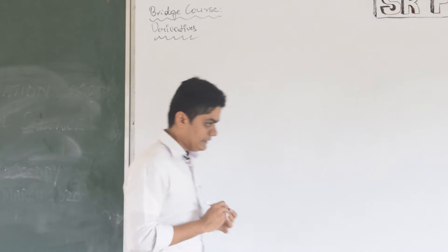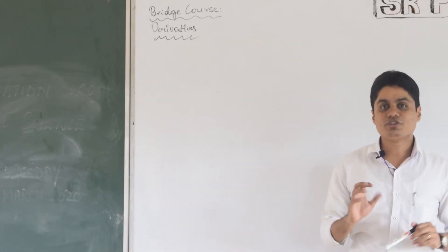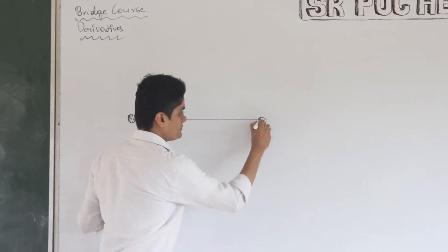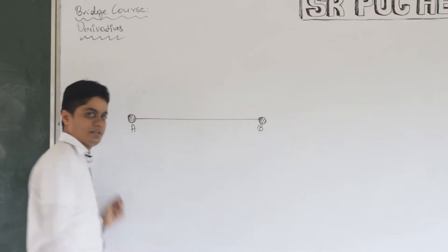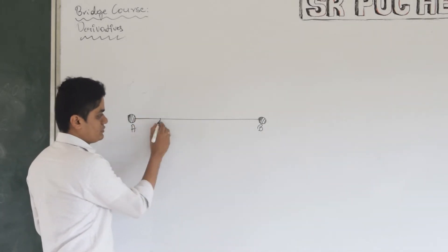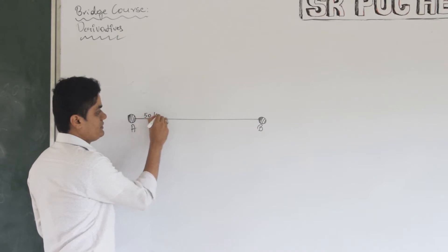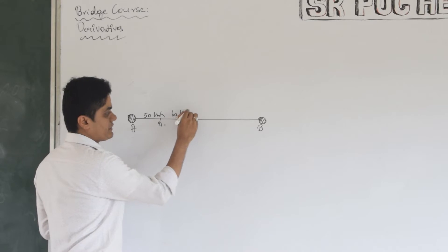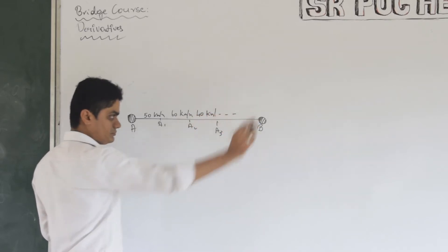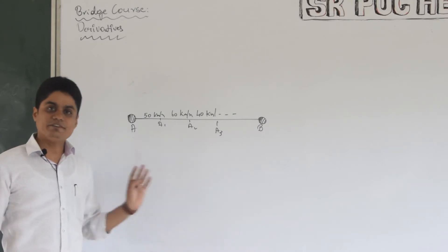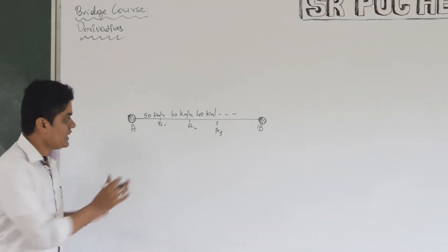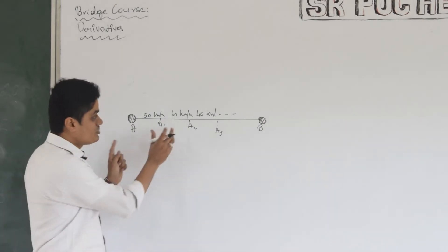So, derivatives — it's a measure of change. What do you mean by measure of change? For example, suppose a car is moving from one place to another, from point A to point B. It will move at different speeds. Suppose it is moving up to A2 at 60 km per hour, maybe A2 to A3 the road is not good, so maybe 40 km per hour. It may not go at a constant speed; definitely there will be a change in speed. This tool will be used to measure how that change is happening — how this change in velocity is happening.